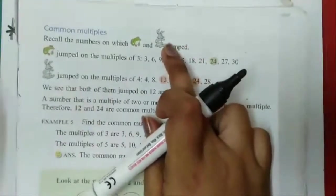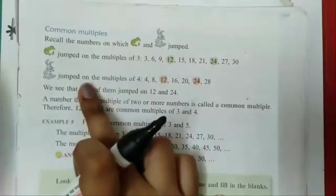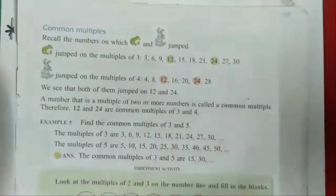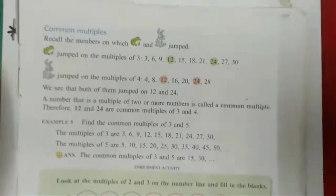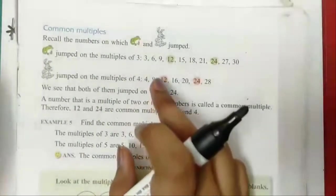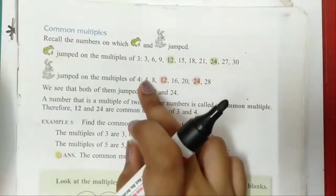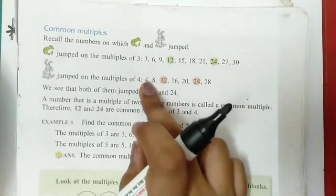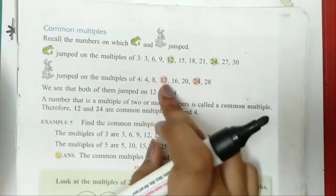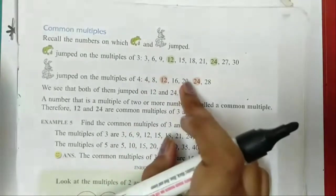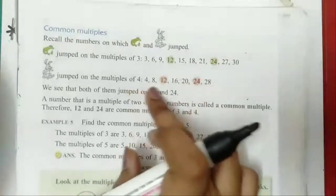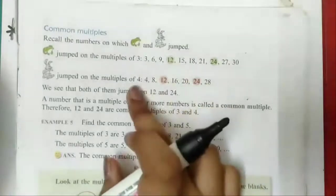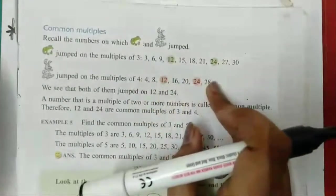Mr. Rabby jumped on the multiples of four. It means four multiples: four, eight, twelve, sixteen, twenty, twenty-four. What are the numbers? The total numbers are the table.